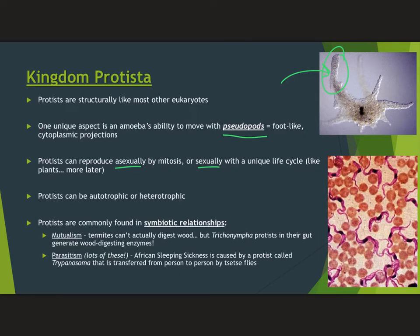Protists are commonly found in symbiotic relationships. To review first semester: remember mutualism — a lot of protists are mutualists. A great example is termites. You might not know this, but termites can't actually digest wood. They eat wood, but then these protists called trichonympha in their gut actually break down the wood. Without this protist inside the termite, they couldn't eat wood.